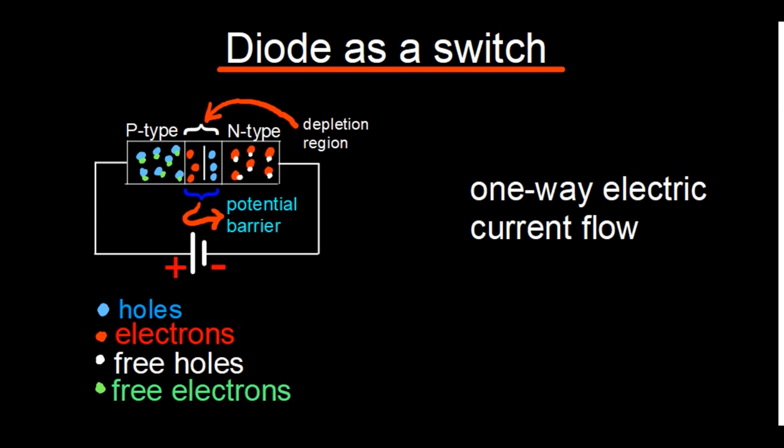When it comes to the uses of a diode, you can use it as a switch, as we're about to demonstrate. We can use it as a regulator, a filter, and of course there's also the application where you can convert AC voltage to DC voltage. But for now we're just focusing on using a diode as a switch.